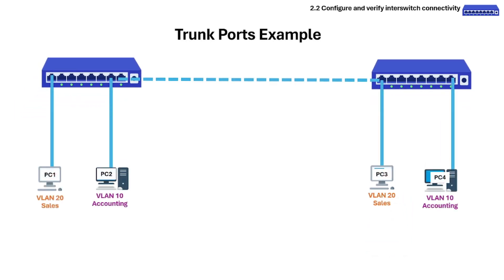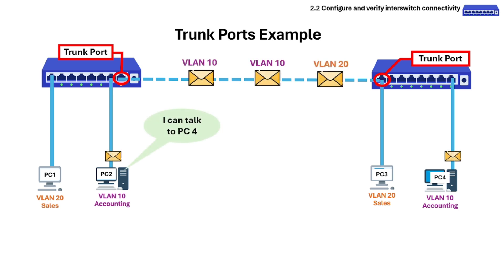For example, imagine two switches, each with devices on different VLANs — VLAN 10 for accounting and VLAN 20 for sales. To allow communication between the accounting devices on both switches, you would configure a trunk port on each switch and connect them. The trunk ports would carry traffic for both VLAN 10 and VLAN 20, allowing the accounting devices to communicate with each other even though they are on different physical switches.